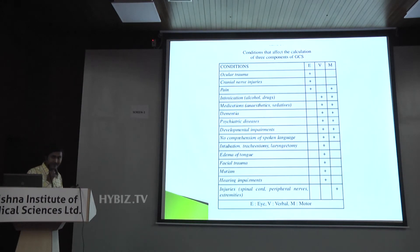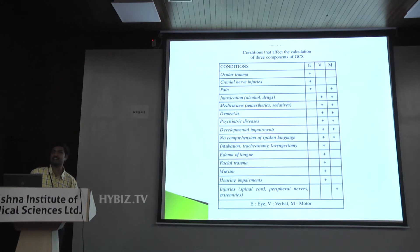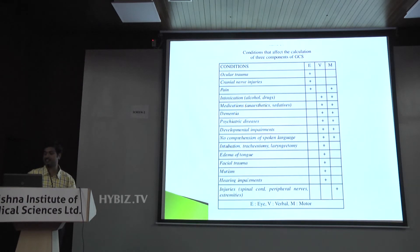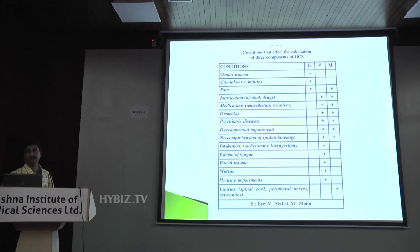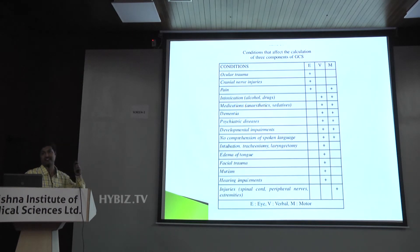Suppose the patient has an eye injury — there is swelling of the eyes. Can I assess the eye response? It's difficult. Suppose there is a third nerve palsy or ptosis; in that case, I will not be able to assess the eye response. Similarly, if the patient is intubated or had a tracheostomy, can I assess the verbal response? No. In that case, at least you indicate by saying verbal response is NT — either intubated or on tracheostomy.